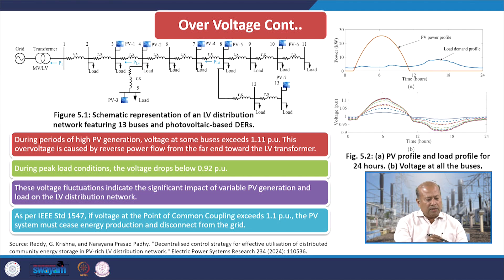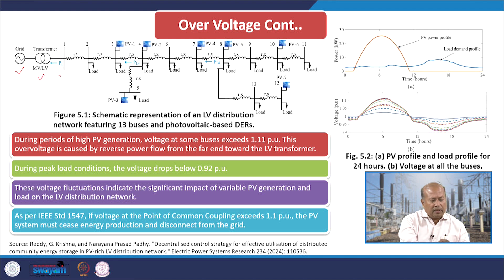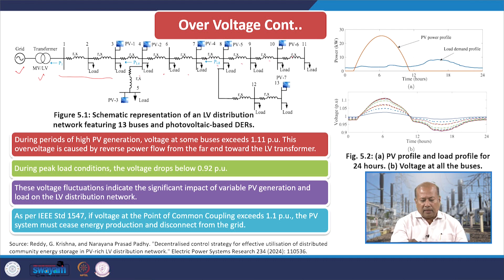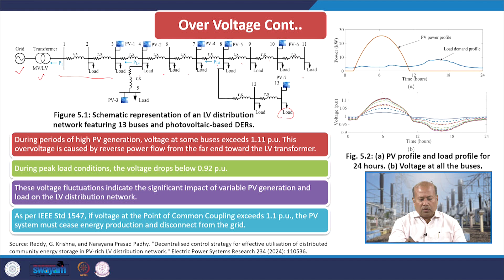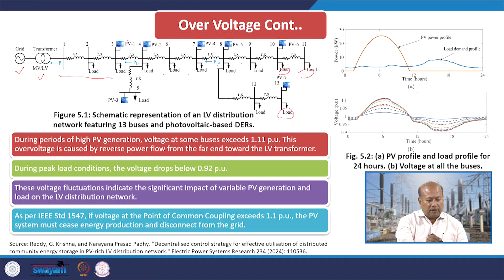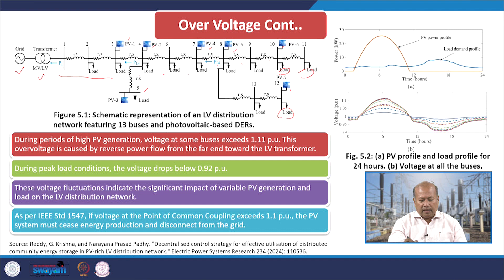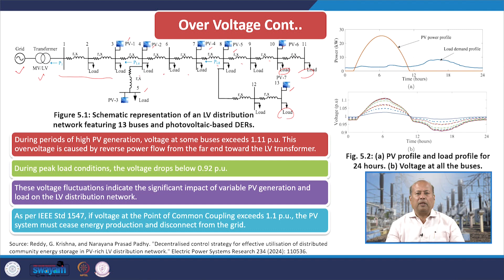Let us consider a distribution system. We have a grid, transformers, and buses 1, 2, 3, 4, 6, 7, 8, 9, 10, 11, 12 and 13 — a certain bus system. Loads are connected, and we also have PV connected at bus numbers 3, 5, 4, 7, 8, 10 and 13. So these are the buses that have not only loads but also PVs.